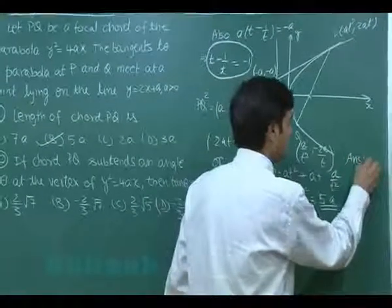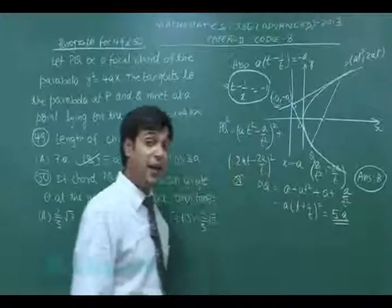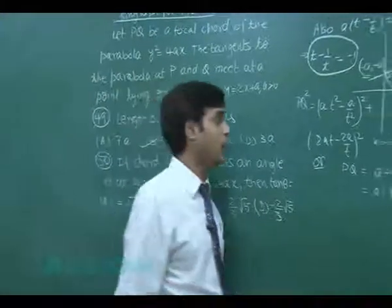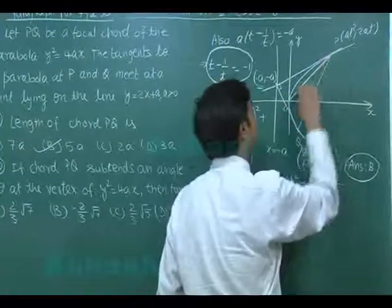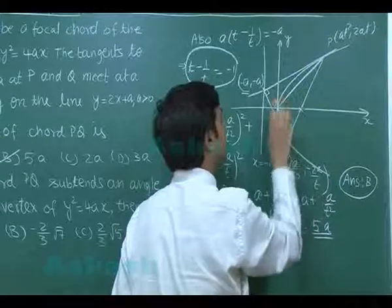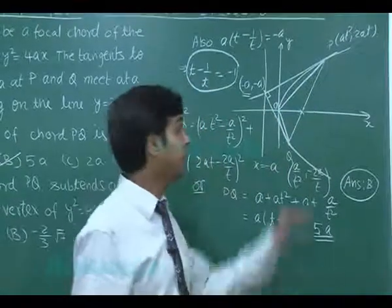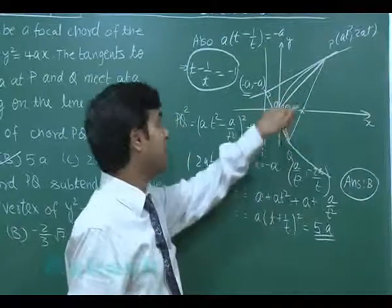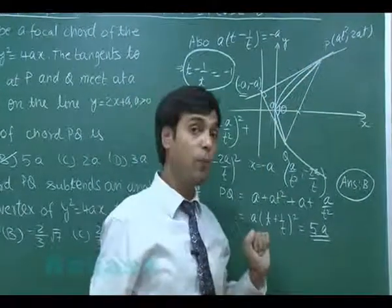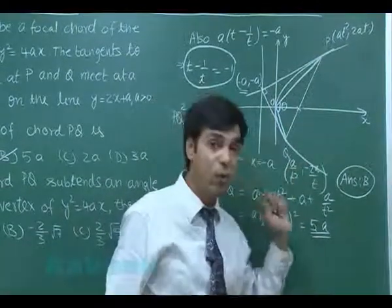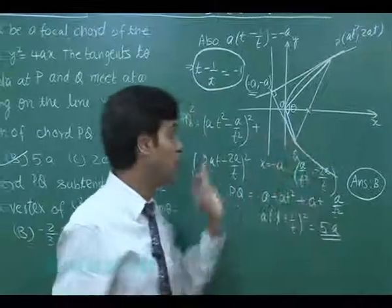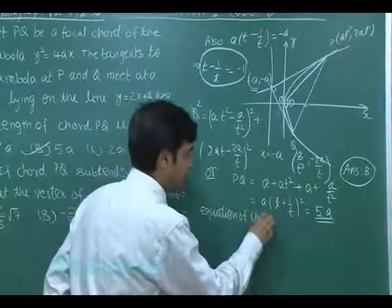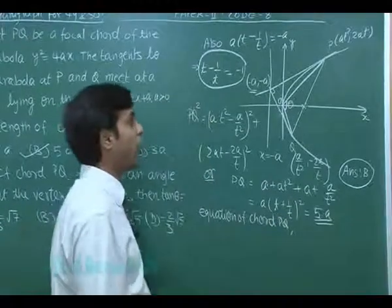The next question asks: if chord PQ subtends an angle θ at the vertex of the parabola, what is the value of tan θ? Let's join the origin to points P and Q. The angle between OP and OQ is θ. To get this value, we find the combined equations of lines OP and OQ by making the equation of the parabola homogeneous with the help of this chord.